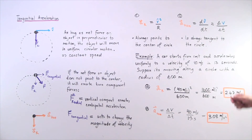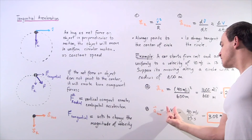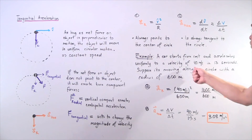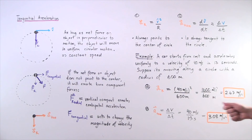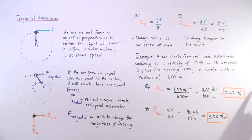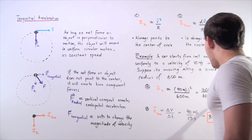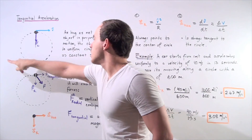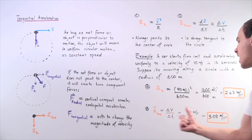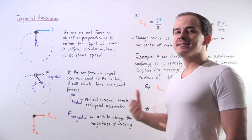For the tangential acceleration, we use the formula change in velocity divided by change in time. The car starts at 0 meters per second and goes up to 40 meters per second, so the change in velocity is 40 meters per second. The total time elapsed is 13 seconds, giving a tangential acceleration of 3.08 meters per second squared. The radial acceleration acts to change the direction of the car and keep it moving along the circle, while the tangential acceleration changes the magnitude of velocity — so in this case, the object's velocity is continually increasing.